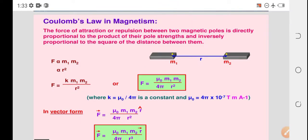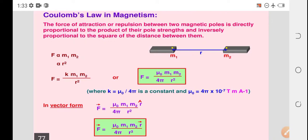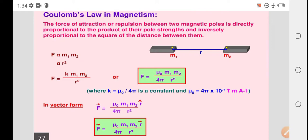Coulomb's law in magnetism. This is a law just like Coulomb's law in electrostatics. The force of attraction or repulsion between two magnetic poles is directly proportional to the product of their pole strength and inversely proportional to the square of the distance between them.